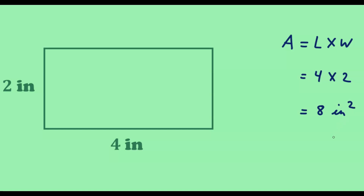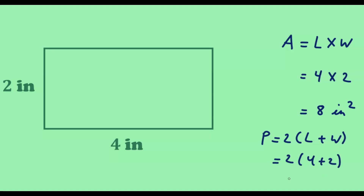The perimeter is given by 2 times l plus w. We have 2 times 4 plus 2, which equals 2 times 6, and that equals 12 inches. The unit of the perimeter will always be the same unit as the length and width.